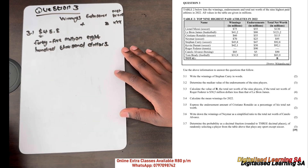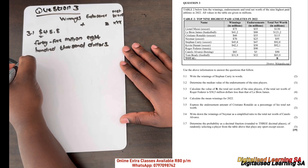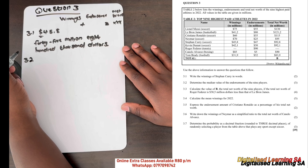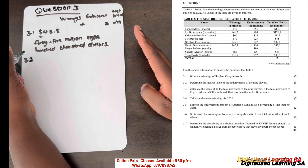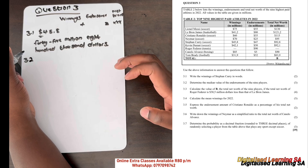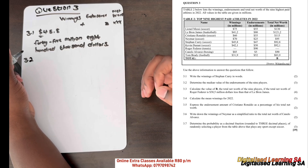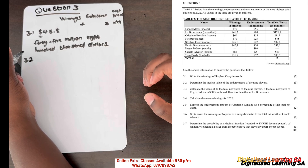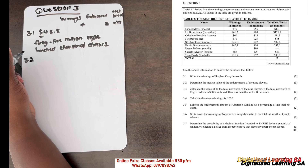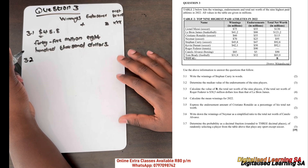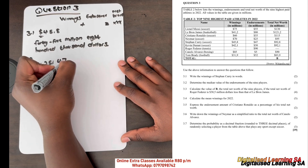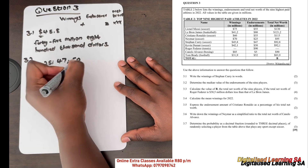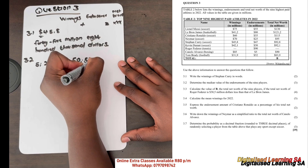Now let's move to question 3.2. Question 3.2 says: determine the median value of the endorsements of the nine players. We'll be looking at the endorsements column. To find the median, we need to arrange our values from smallest to highest first. So the smallest endorsement is 5, then 25, then 47, then 50, then 52, then 55.